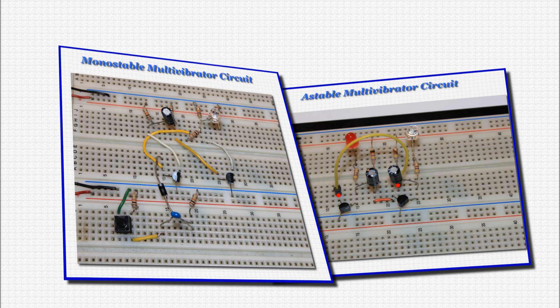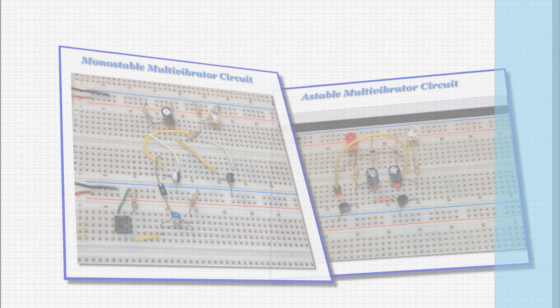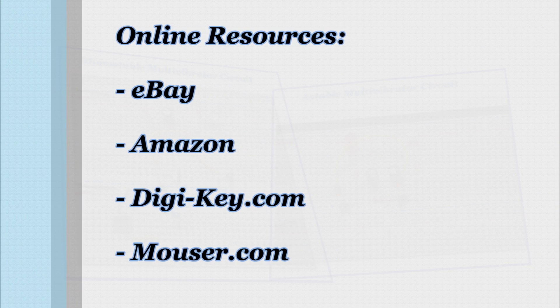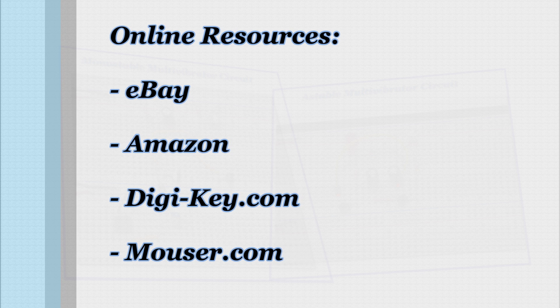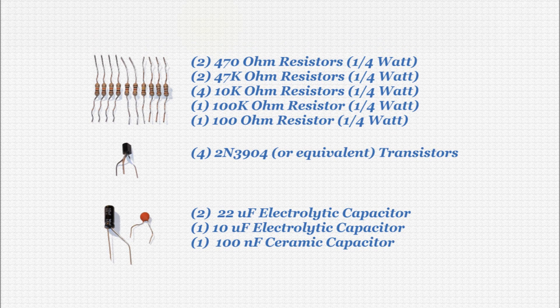In this two-part video tutorial we will need some electronics components. You may have these already but if not they can be found at various online sources such as eBay, Amazon, digikey.com and mouser.com to name a few. Here's what you'll need.